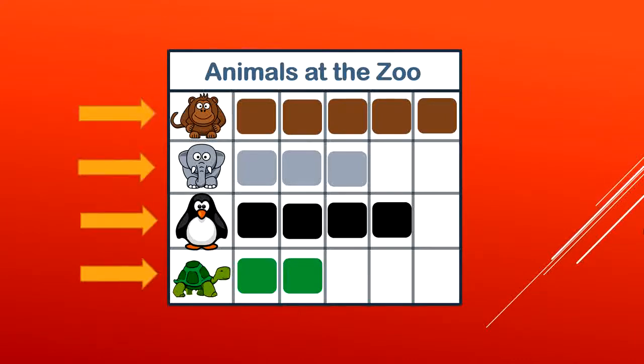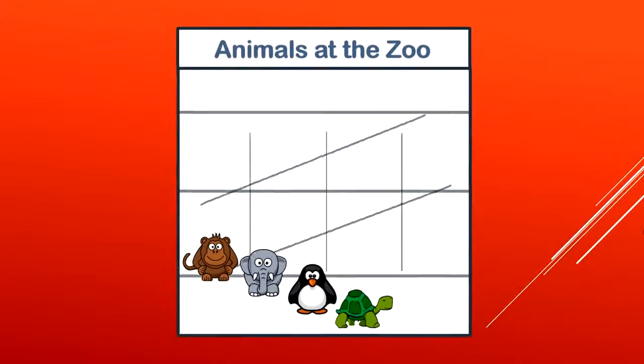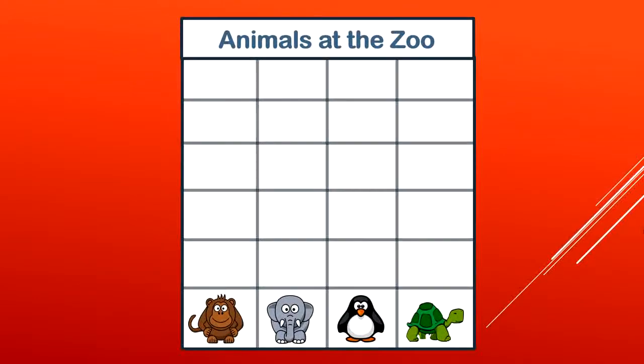We call this direction horizontal, but I can switch my bar graph around to go in a different direction. Now the labels monkey, elephant, penguin, and turtle are at the bottom of my graph, so when I fill in my information it's going to look different.